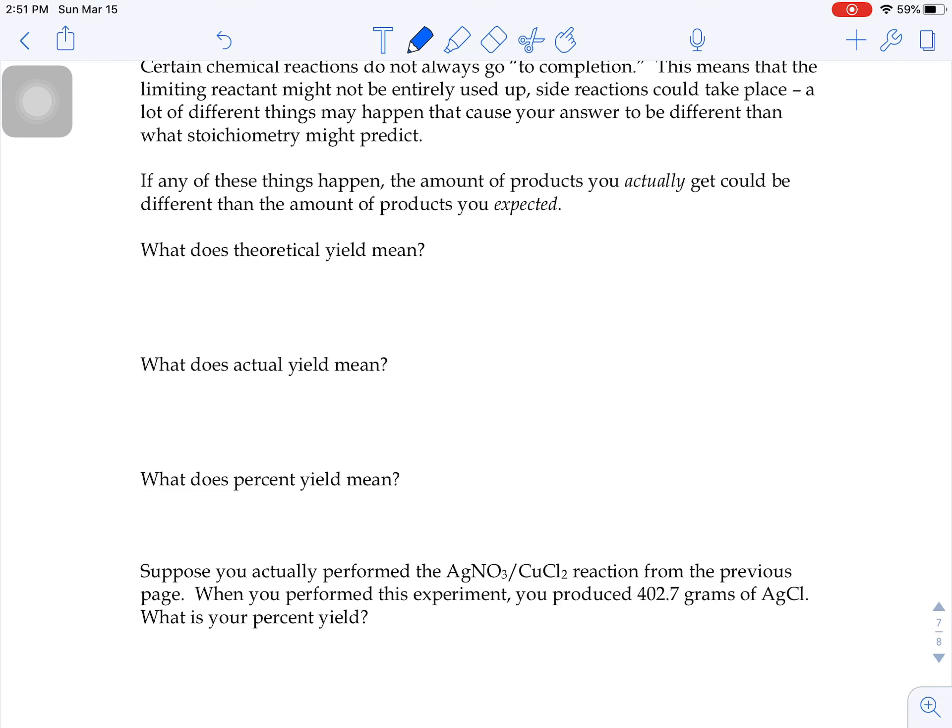So there's two vocabulary words here: theoretical yield and actual yield. When you hear the term theoretical yield, it means that's the amount you should be able to make if everything goes perfectly.